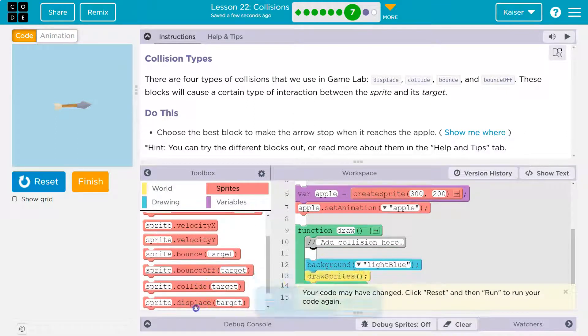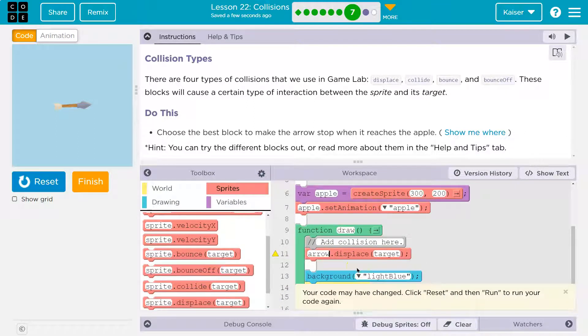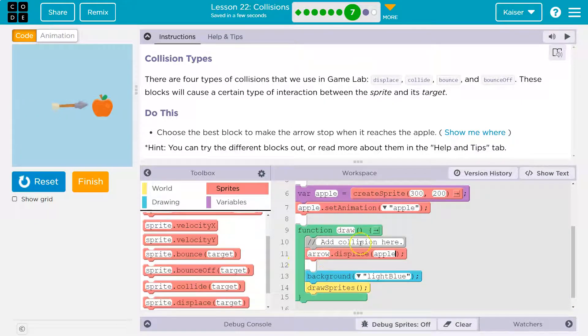Now, we want them to stop. What if we do displace? Arrow - and I hope you're scripting 'no,' because this isn't going to work either. Now the arrow will displace the apple. It's just going to push it off the screen.